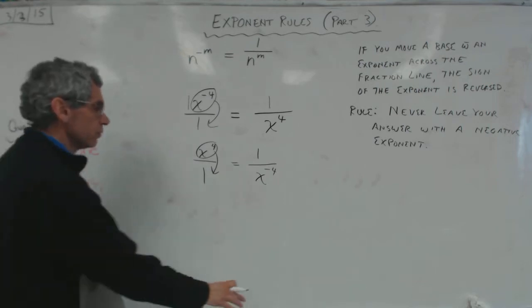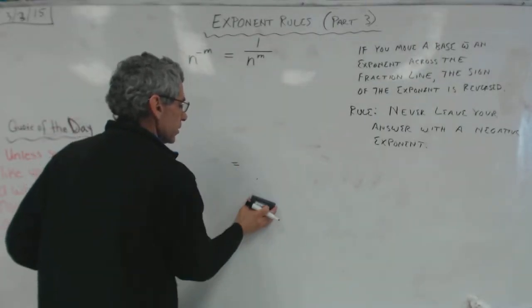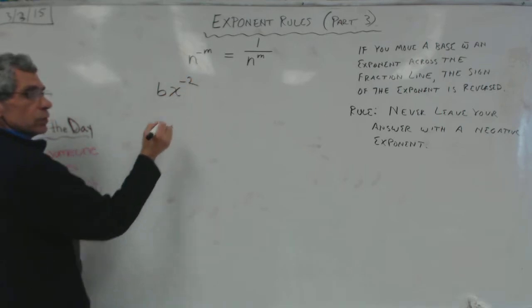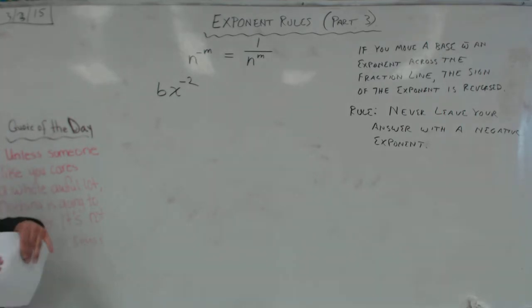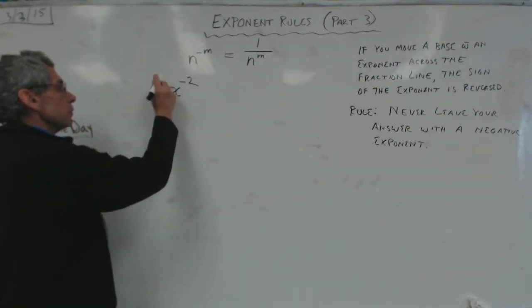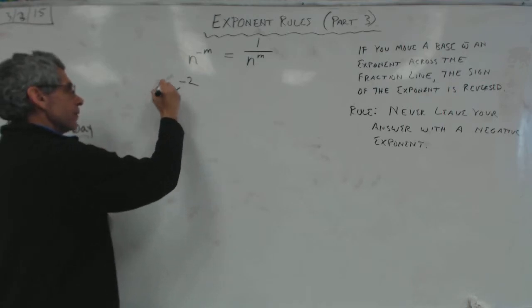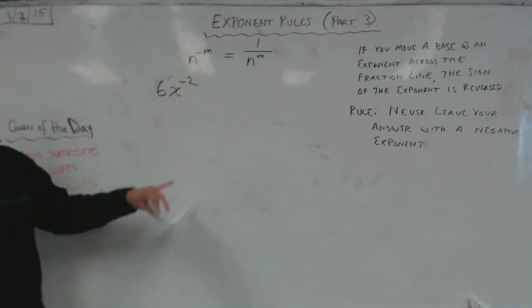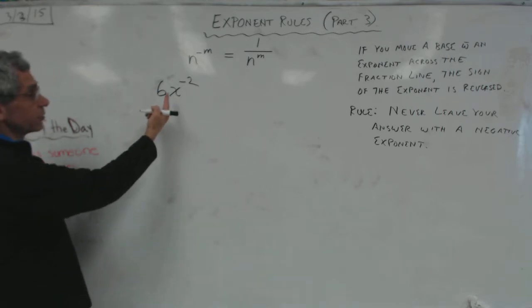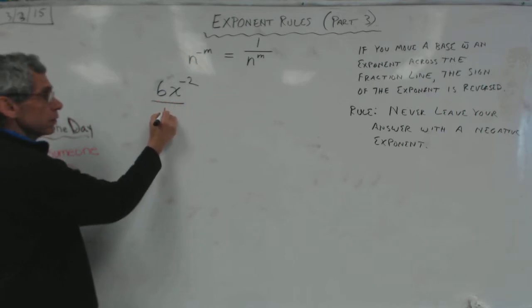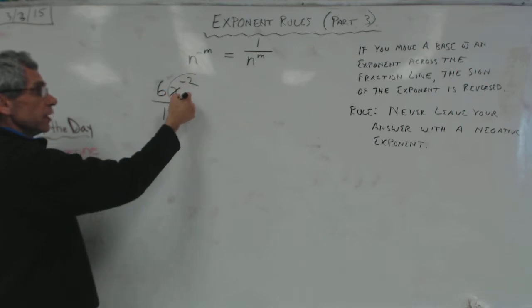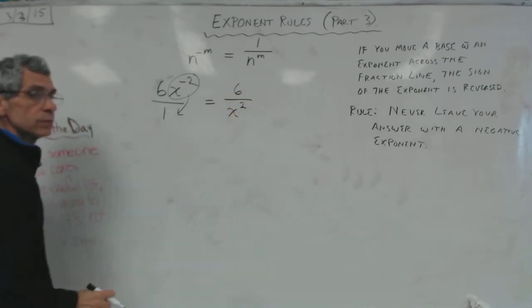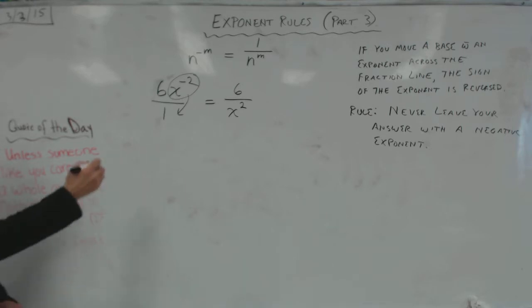Never leave your answer with a negative exponent. Therefore, if I gave you, let's just start fresh here. Let's try a few problems. If I gave you this, 6x to the negative 2, right? I can't leave this. I don't know. Whatever. 6x to the negative 2. Never leave your final answer with a negative exponent. So I'm going to put it over 1, right? And I'm going to circle with the negative 2 of x. And it's only the x. That's going to come downstairs. So my answer is 6 over x to the now positive 2. Does that make sense? You see that? All right. So that's example 1.